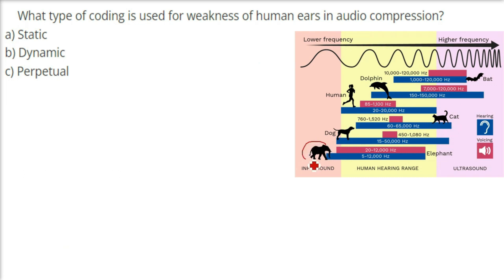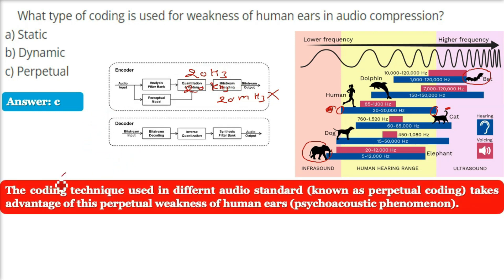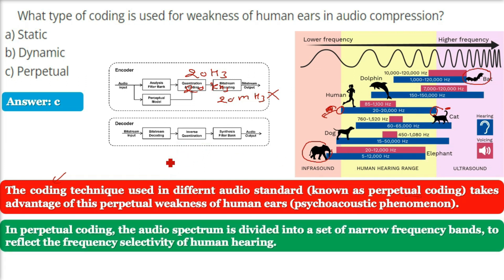Human hearing range is only from 20 Hz to 20 kHz. All organisms have a listening range or frequency limitation. Sounds above 20 kHz cannot be heard by any human. This weakness of human ears is exploited to minimize file size — sounds not audible to human ears that are present in a recorded waveform can be removed. This is called perceptual coding.